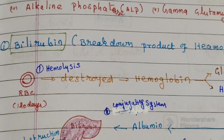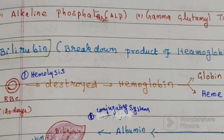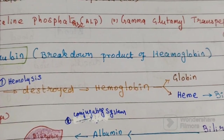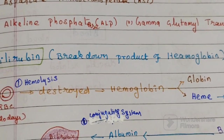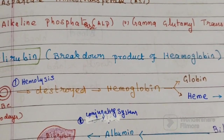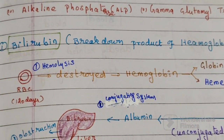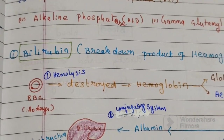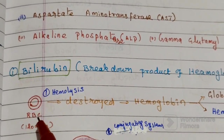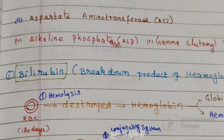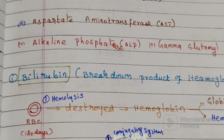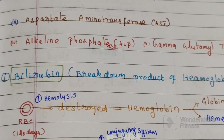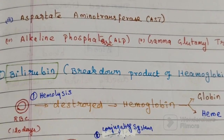The first one is bilirubin. Bilirubin is a breakdown product of hemoglobin. When RBCs complete their lifespan of 120 days, they are destroyed in the body and hemoglobin is released.